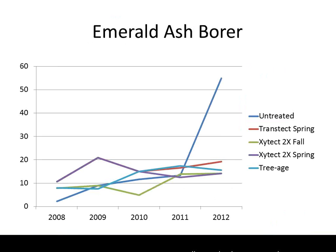Here is research from a project in Hazelcrest, a suburb of Chicago. Transtec spring applications made in late April to early May annually from 2008 through 2012 provided a high level of control against Emerald Ash Borer. The untreated control ash trees ramped up with Emerald Ash Borer damage from 2010 to 2012 and have since all died or been removed. Most of the treated trees, including the Transtec spring application group, have maintained less than 20% crown thinning and dieback — a good result for Emerald Ash Borer management.